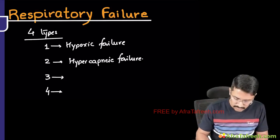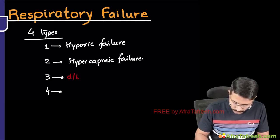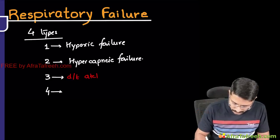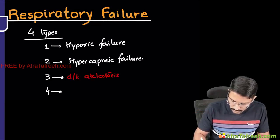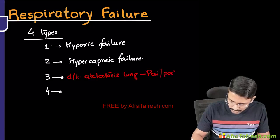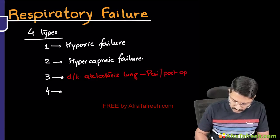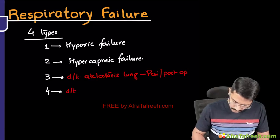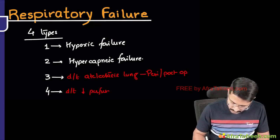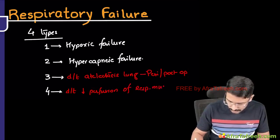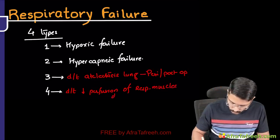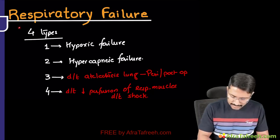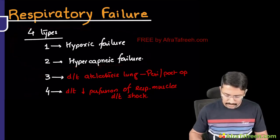Type 3 respiratory failure is the respiratory failure due to atelectasis of the lung — atelectasis in the peri or post-operative period. Type 4 respiratory failure is due to reduced perfusion of the respiratory muscles due to shock. We will discuss type 1 and type 2 in detail first, and then address type 3 and type 4.